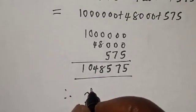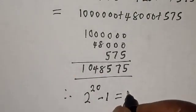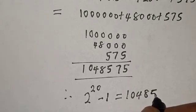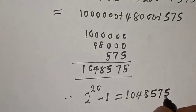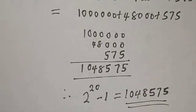Therefore, 2 raised to power 20 minus 1 is equal to 1,048,575. This is the final answer. If you enjoyed my video, please like and subscribe to my channel. Thank you, bye bye.